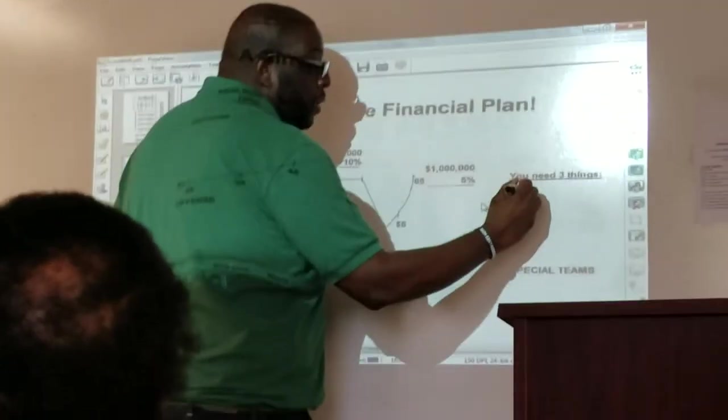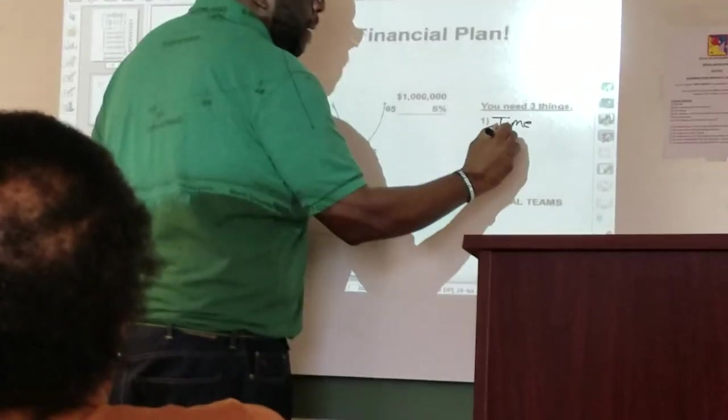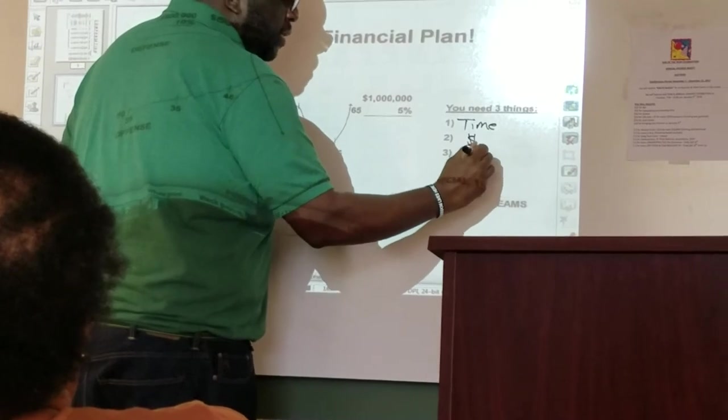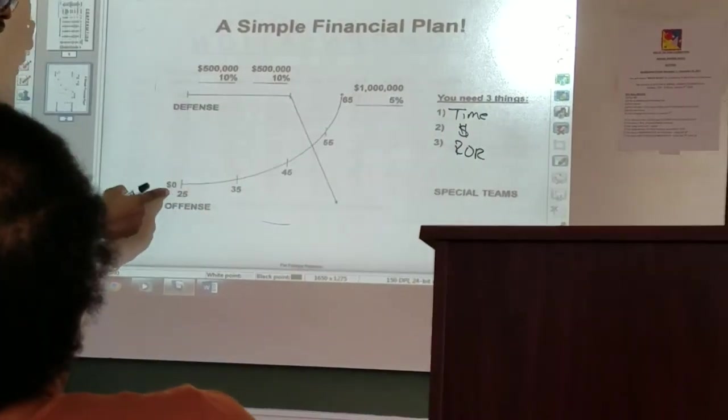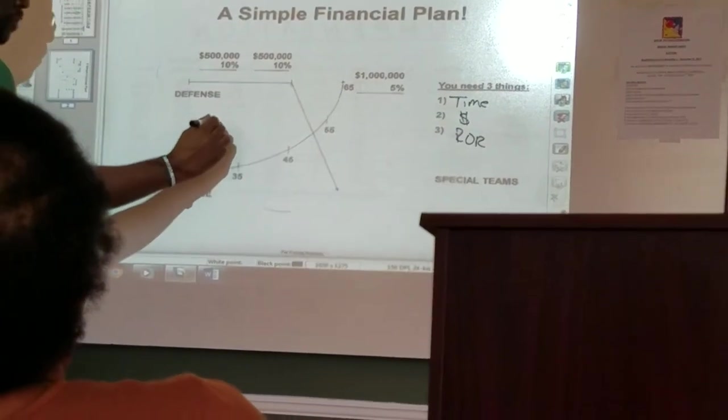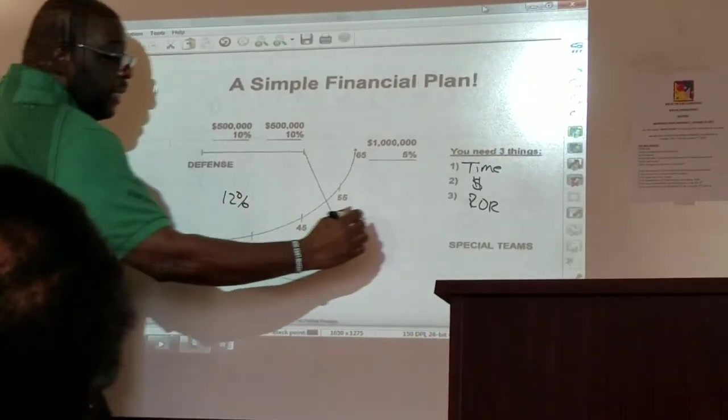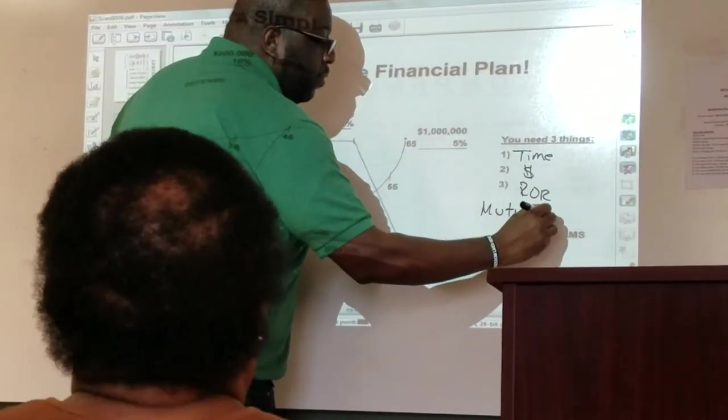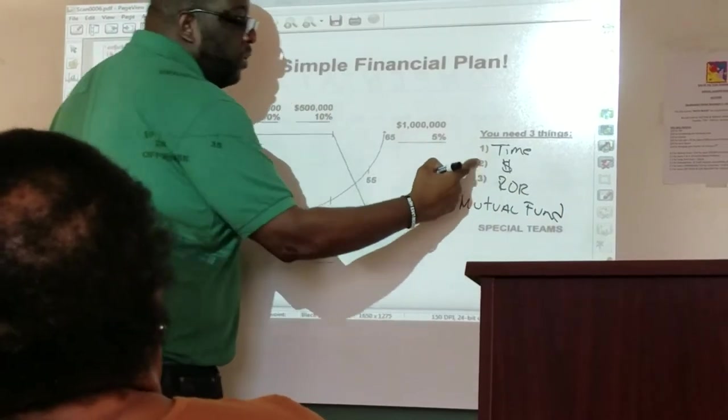All I want to do is, no big deal, when you do this you've got time, money, and a rate of return. And you need this 25 mutual funds averaging 12%. All these rates are related to a mutual fund. One, two, three.